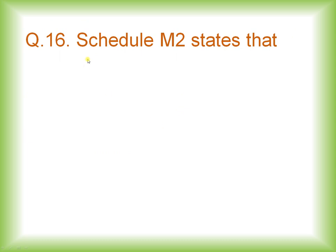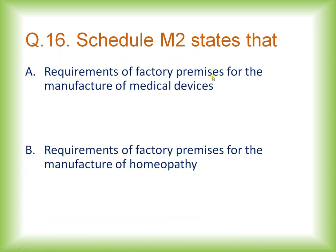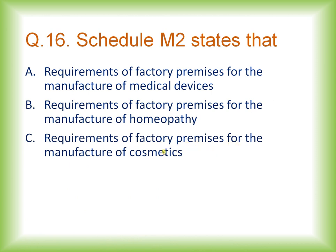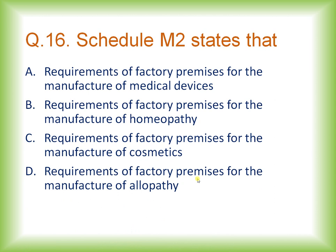Question number sixteen: Schedule M2 states the requirement of factory premises for manufacturing of — medical devices, allopathy medicines, or cosmetics? The correct option is option C: Schedule M2 states the requirement of factory premises for the manufacturing of cosmetics.